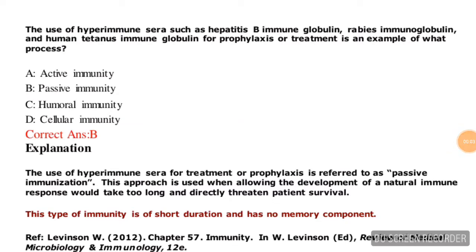Hi friends, good morning! Welcome to our channel. Today we are going to discuss questions based on rabies. Question number one: the use of hyperimmune sera such as hepatitis B immune globulin, rabies immunoglobulin, and human immune globulin for prophylaxis or treatment is an example of what process? Options are: active immunity, passive immunity, humoral immunity, and cellular immunity. The correct answer is option B — passive immunity.